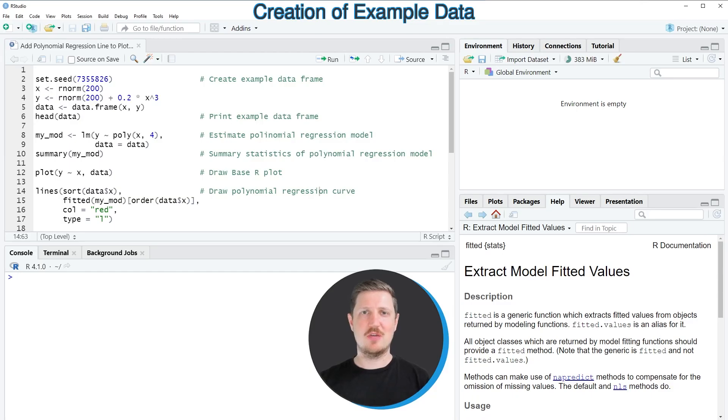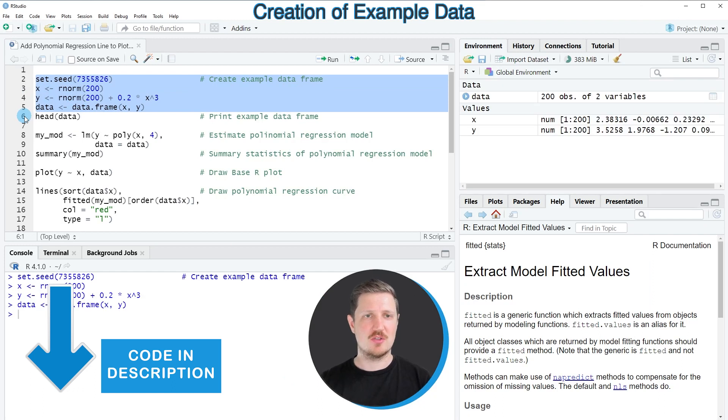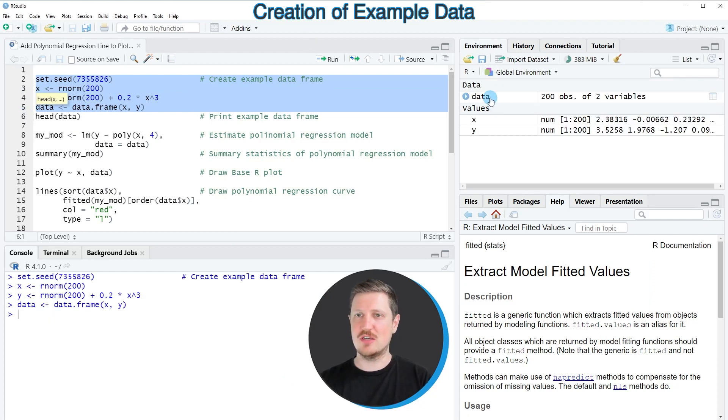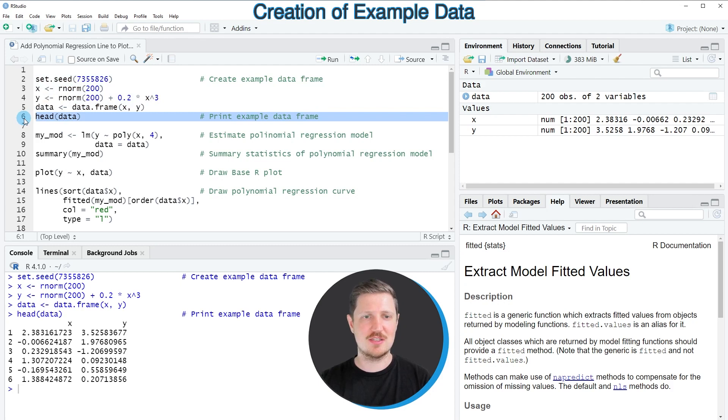In this video I will show you two examples and both of these examples are based on the data frame that we can create with lines 2 to 5 of the code. So after running these lines of code, a new data set called data is appearing at the top right and we can print the first six rows of this data set using the head function as you can see in line 6 of the code.